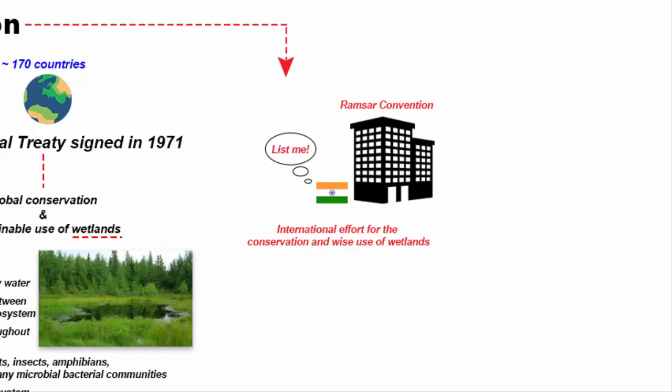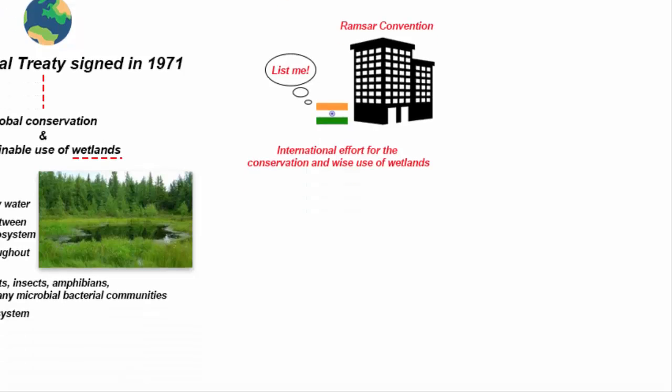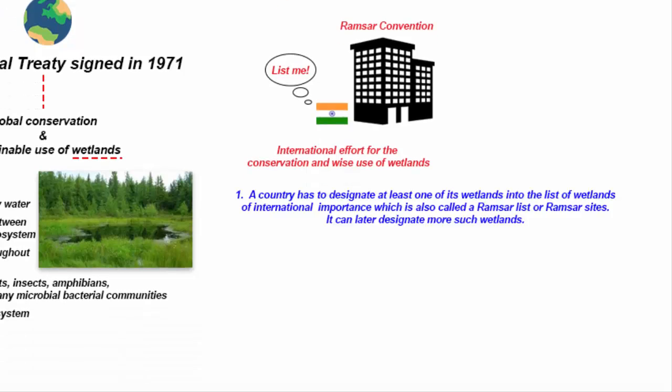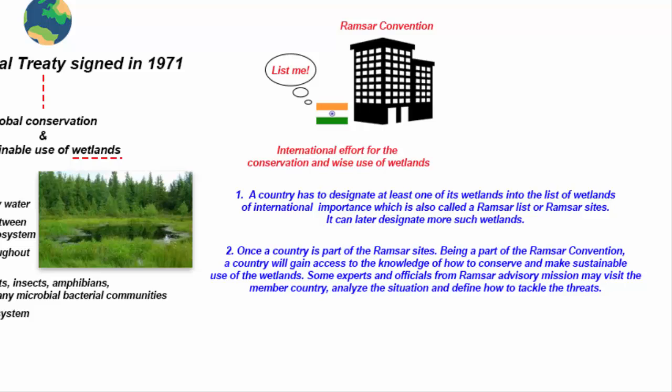Once a country has joined, there are three commitments which have to be fulfilled. First, a country has to designate at least one of its wetlands into the list of wetlands of international importance, also called the Ramsar list or Ramsar sites, and it can later designate more such wetlands. Second, once a country is part of the Ramsar Convention, it will gain access to the knowledge of how to conserve and make sustainable use of the wetlands.